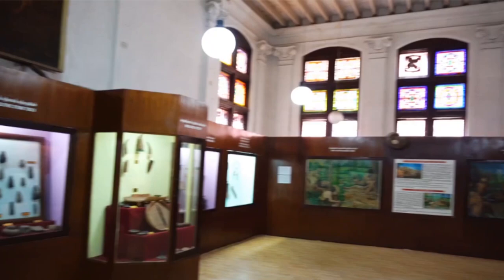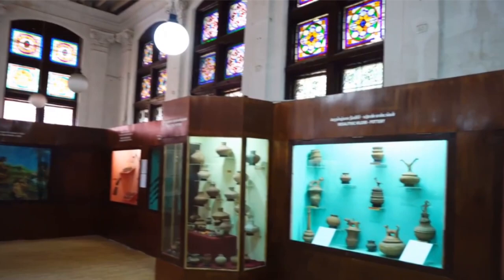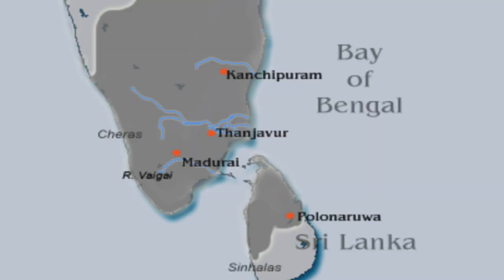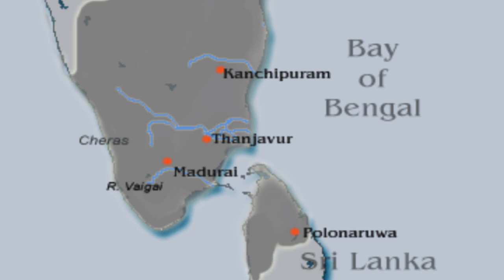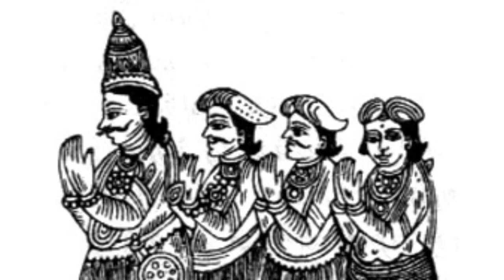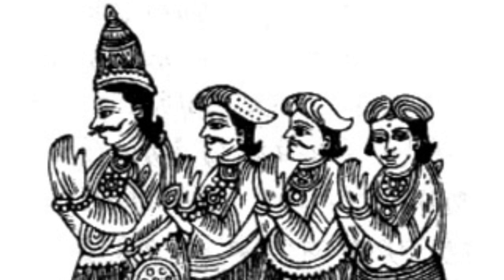Tamil has the longest unbroken literary tradition amongst the four Dravidian languages — Tamil, Telugu, Kannada, and Malayalam. The Tamil language also varies linguistically across three different dimensions: geography, caste, and dialects. The six original dialects can be classified as east, west, north, south, central, and Sri Lankan. Sri Lankan Tamil is more conservative, since it retains older features of the language.